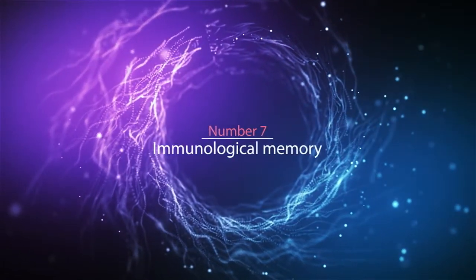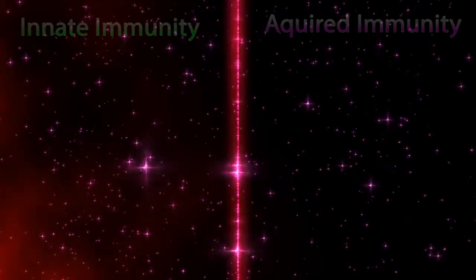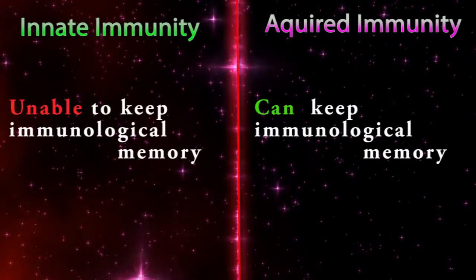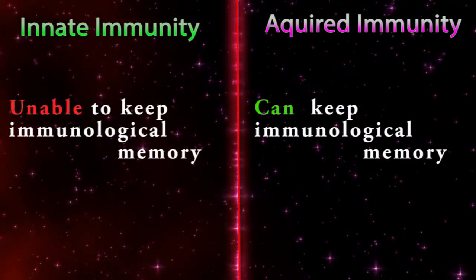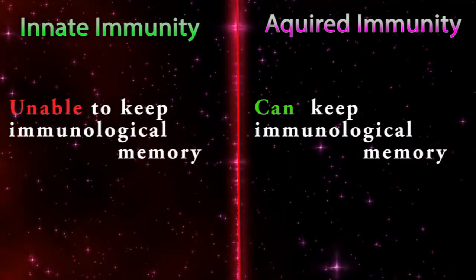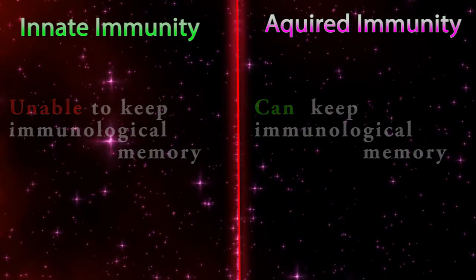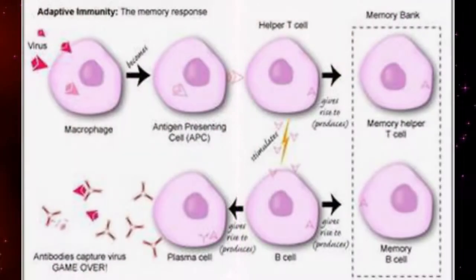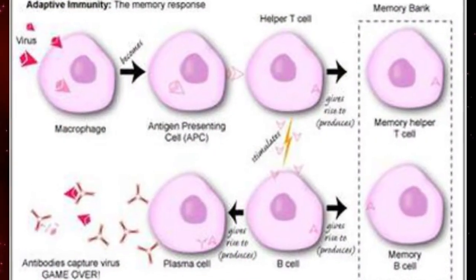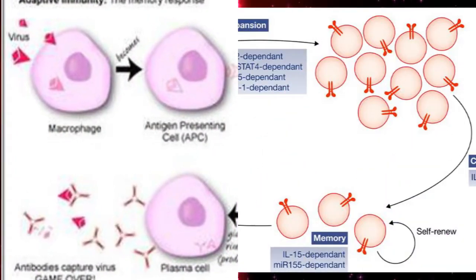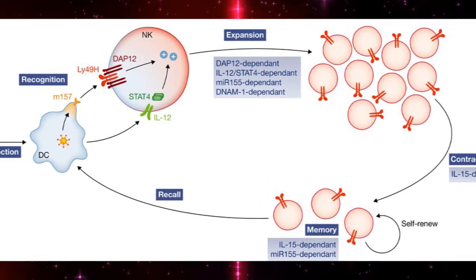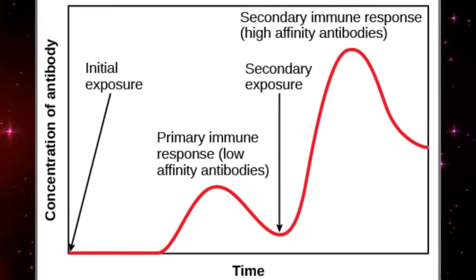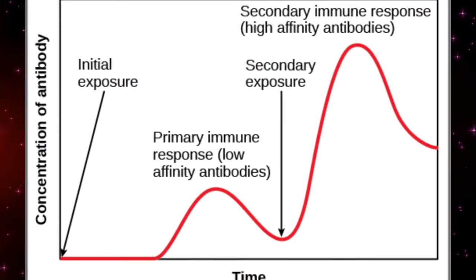Difference number seven — immunological memory: innate immunity is unable to keep immunological memory, but acquired immunity can keep immunological memory. Immunological memory refers to the ability of the immune system to respond more rapidly and effectively to a pathogen that has been encountered previously.